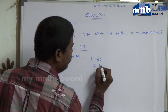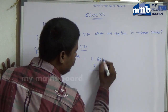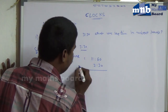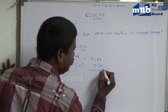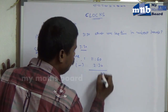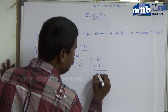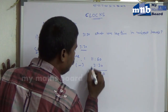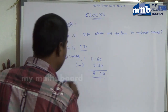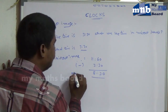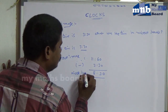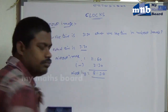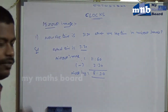Subtract 3:30 from 11 hours 60 minutes. The result is 8:30. So the mirror image is 8:30. That's enough.